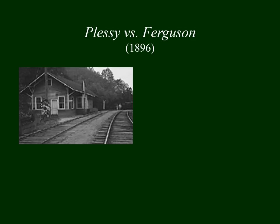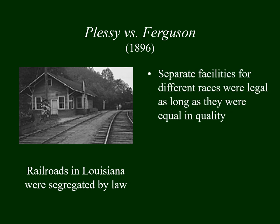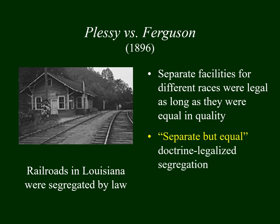I'd like to explore the legal basis for segregation. Segregation based on race was confirmed by a Supreme Court decision in the 1890s called Plessy vs. Ferguson. This dealt with the law in Louisiana where all railroad cars were segregated by law. The Supreme Court declared that separate facilities for people of different races were legal as long as they were equal in quality. This gave us the so-called separate but equal doctrine.